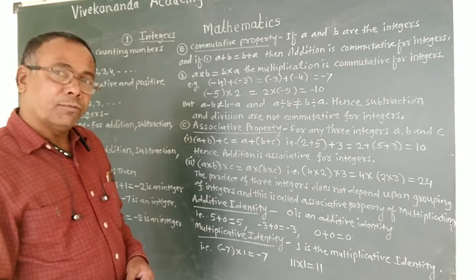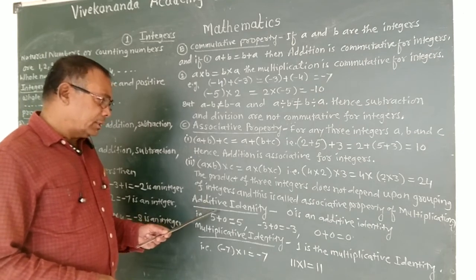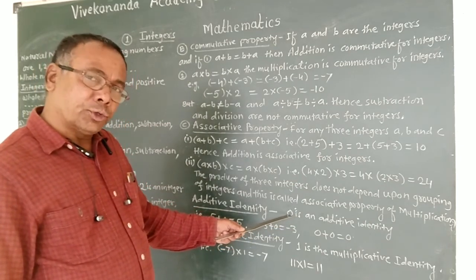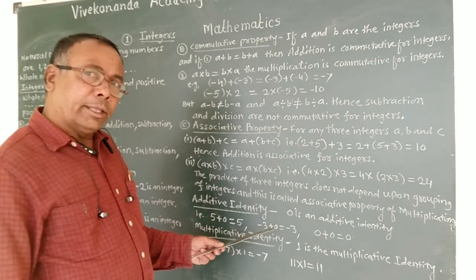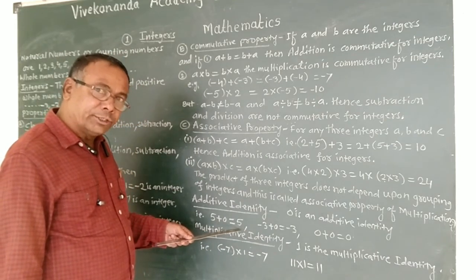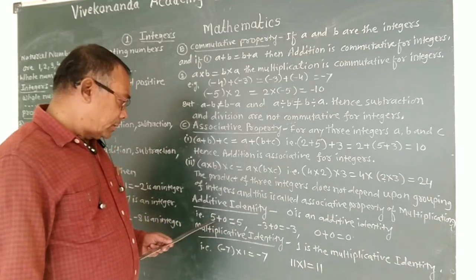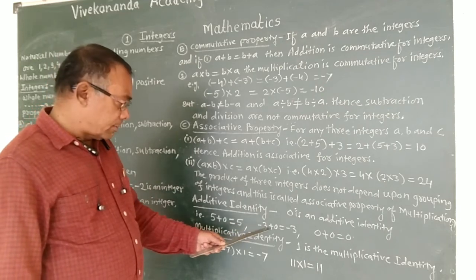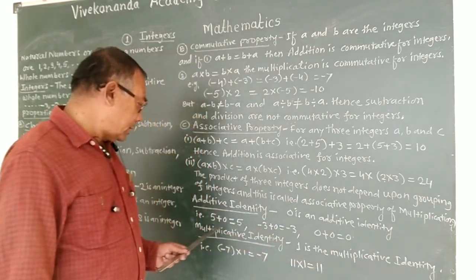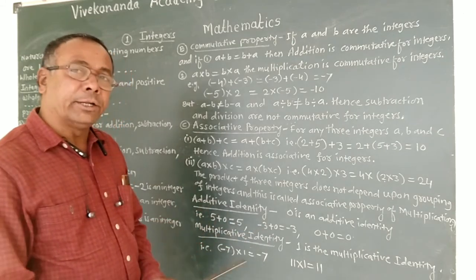If we add zero to any number, its value does not change. Therefore, zero is the additive identity. For example, 5 plus 0 equals 5, minus 3 plus 0 equals minus 3, and 0 plus 0 equals 0. The identity of 5 and minus 3 does not change, so zero is the additive identity.